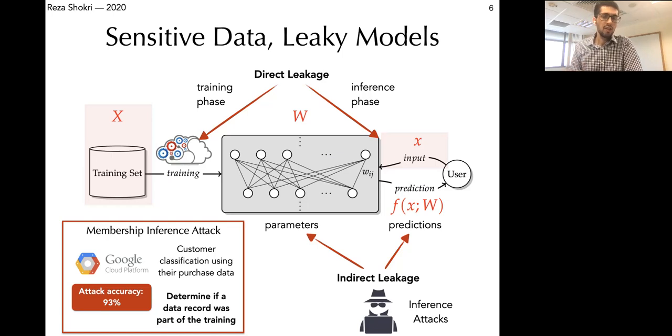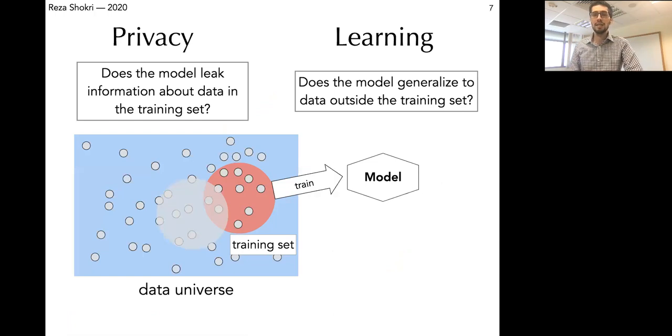This is a very serious threat against privacy because we want the models to extract general patterns that could be generalized to data outside the training data. But we see that because of certain memorization that happens during training, the models actually remember sensitive information that could be later extracted by some attacks. We have shown that these attacks can work on existing algorithms and also on machine learning as a service platforms which are out there and many people might use by uploading their sensitive data.